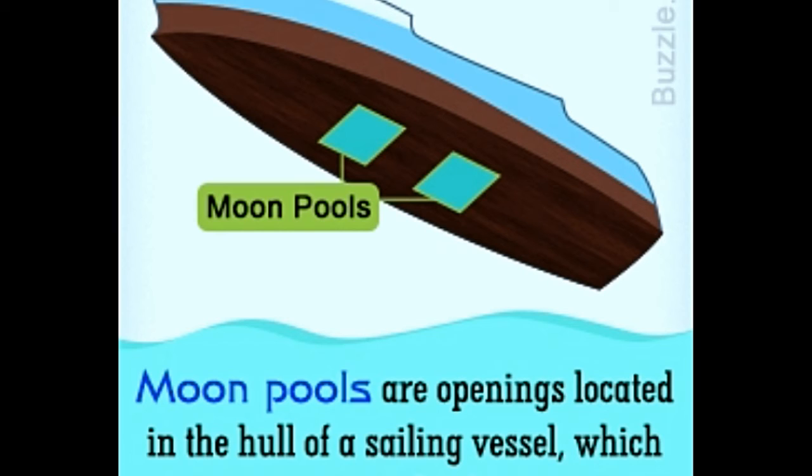This type of moon pool usually requires ships with a twin hull design and is most commonly found on oil drilling platforms.